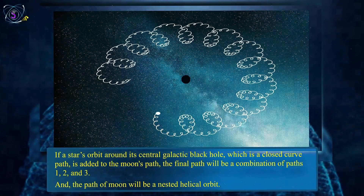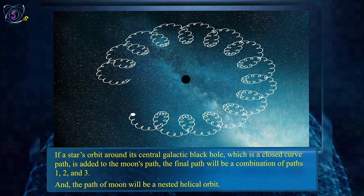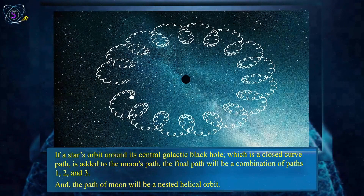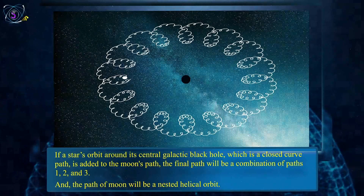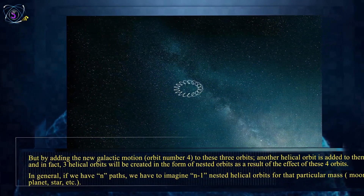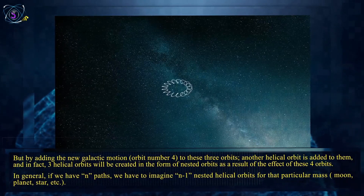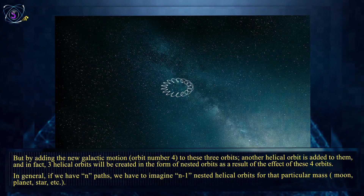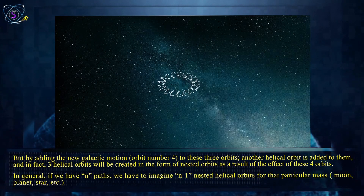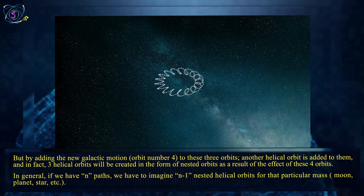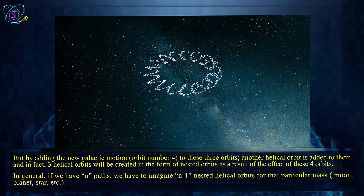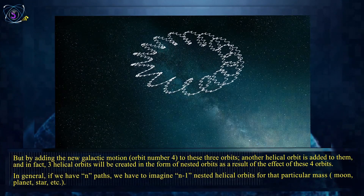Adding orbit number 4 to these three orbits, another helical orbit is added, and in fact three helical orbits will be created in the form of nested orbits as a result of these four orbits. In general, if we have n paths, we have n-1 nested helical orbits for that particular mass — moon, planet, star, etc.